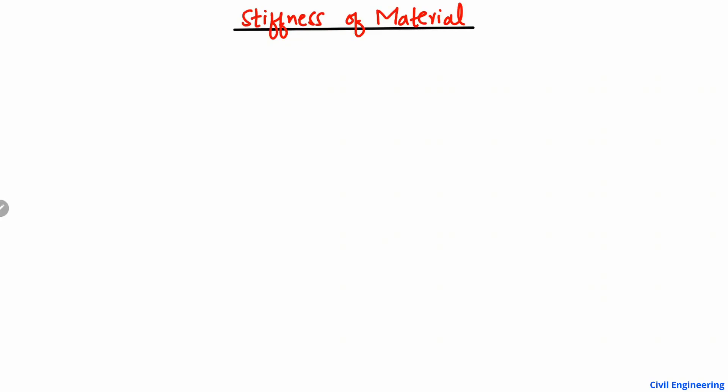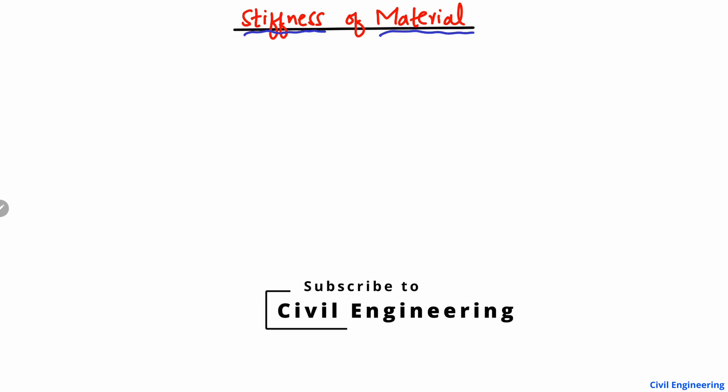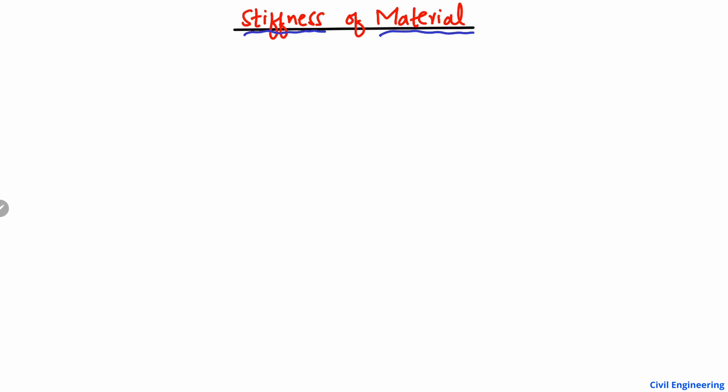Hello guys, welcome back to the civil engineering YouTube channel. Please subscribe to our channel for daily civil engineering videos. Today's lecture we are going to explain the stiffness of the material and define the two important types: axial stiffness and bending stiffness (or flexural stiffness). We are going to explain these with the help of an example so it will be easy to understand and follow.